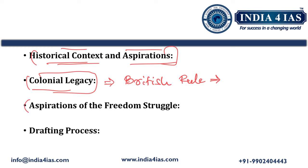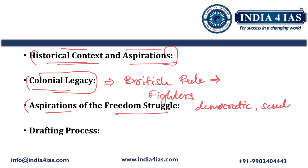Then we should transition to the aspirations of the freedom fighters. During the freedom struggle, what was the aspiration of the freedom fighters? What did they envision for an independent India? They envisioned a democratic, secular, and inclusive India. This was the aspiration of freedom fighters like Mahatma Gandhi, Ambedkar, Nehru, Sardar Vallabhbhai Patel, Bhagat Singh, and Subhash Chandra Bose.